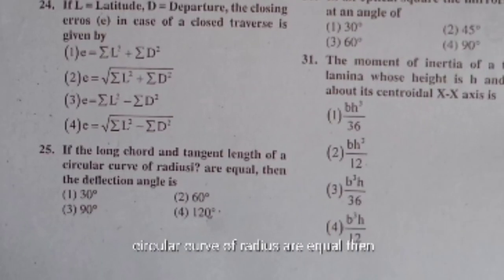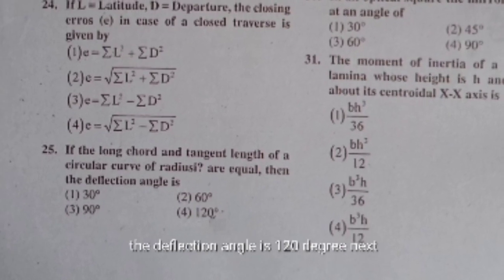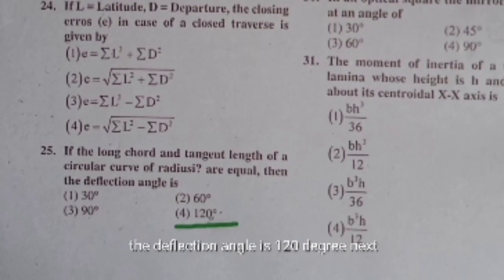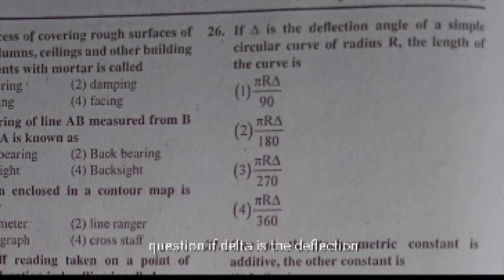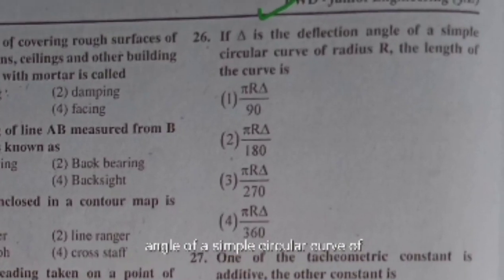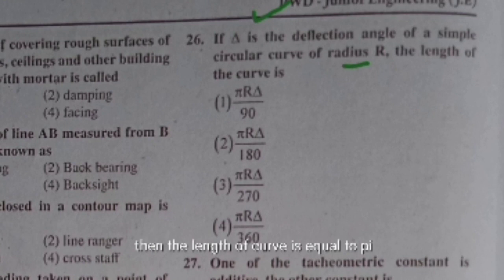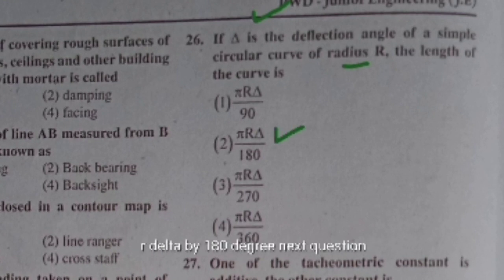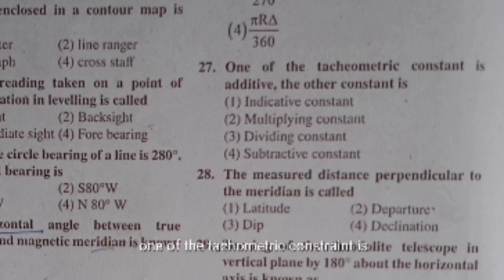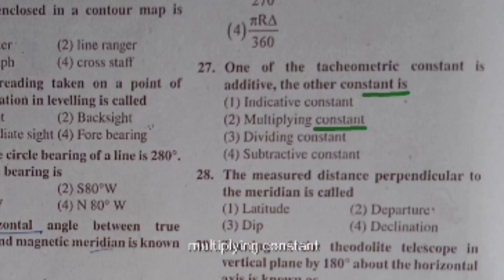If the long chord and tangent length of a circular curve of radius R are equal, the deflection angle is 120 degrees. If delta is the deflection angle of a simple circular curve of radius R, the length of the curve is equal to πRΔ/180°. In tachometry, one constant is additive and the other is the multiplying constant.